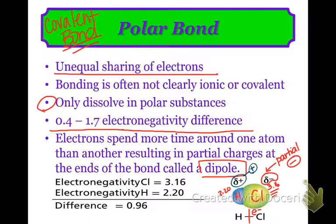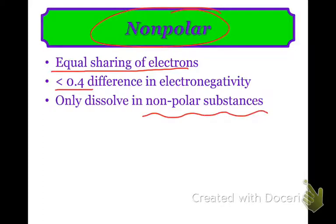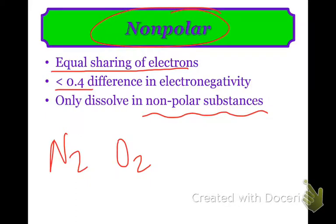We also have the opposite where we do have equal sharing happening. Nonpolar is actually where we get equal sharing — electronegativity difference of 0.4 or less. This only dissolves nonpolar things. A lot of times nonpolar examples are when you bond something with itself, like N2 or O2, where they're bonded to themselves. Obviously they're of the exact same strength, so they're not going to be able to pull harder — their electronegativities are exactly the same.